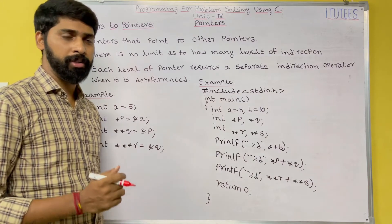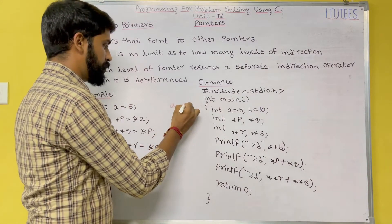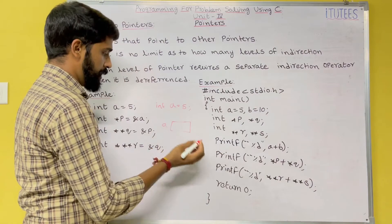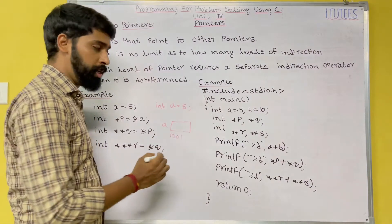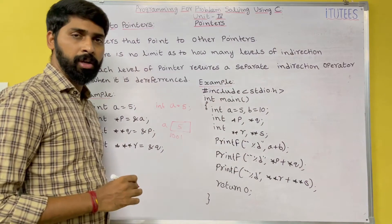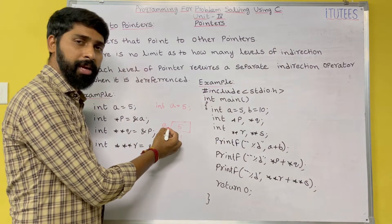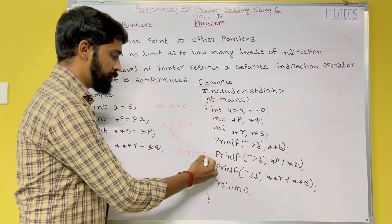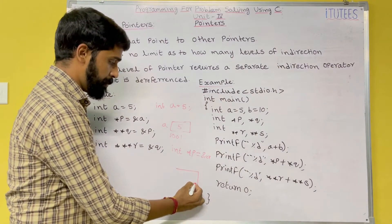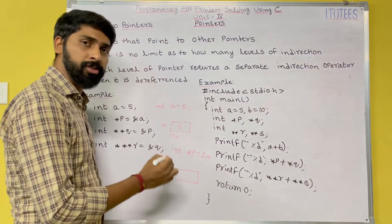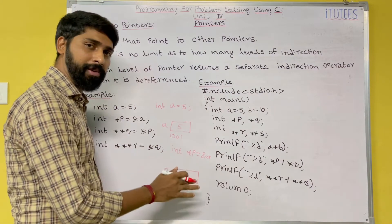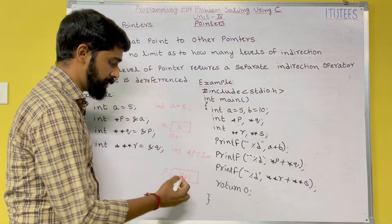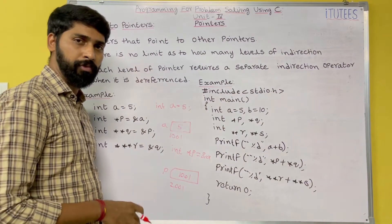So I am taking a variable `a` equals to 5. Let us assume the address of `a` is 1001 — in this location the value 5 is stored. I declare a pointer like this: `int *p = &a`. So `p` is a pointer variable and the content in this pointer variable is always an address, so we store 1001. The pointer `p` itself also has some address — let us assume 2001.